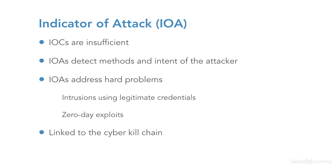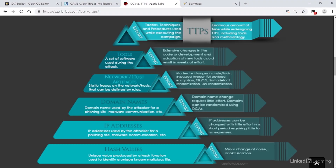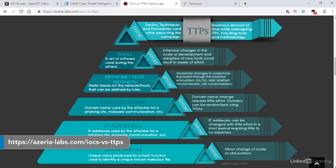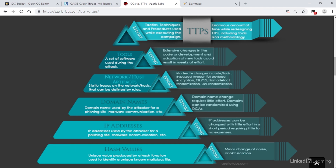IOAs are often linked to the cyber kill chain, the set of steps an attacker will take starting with basic reconnaissance. IOAs can be used to monitor for signs of an attack at many of these kill chain stages. IOAs provide a useful diagram explaining the development of sophisticated detection techniques from basic signatures with hash values to IOCs based on IP addresses, domain names and so on, through to the most advanced approach using TTPs.